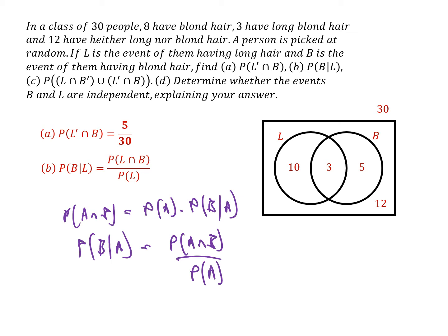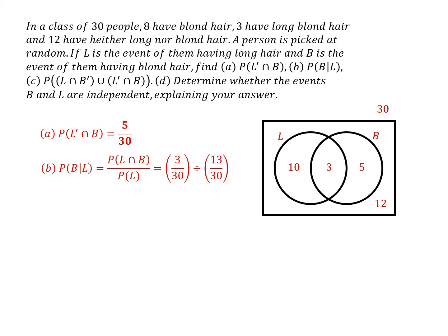I've changed the A to L and B to B, because there's nothing special about A and B - they can be anything we like. That's the revised version of the formula. When we do that calculation, P(L ∩ B) is 3/30, that's the bit in the middle, divided by P(L) which is 13/30, and that gives us 3/13.